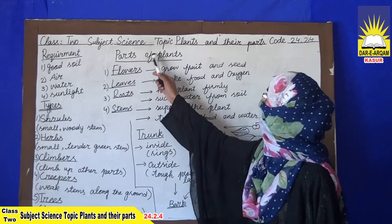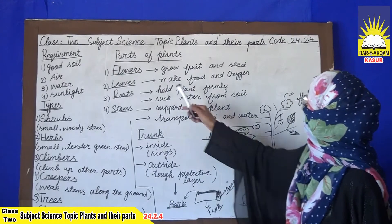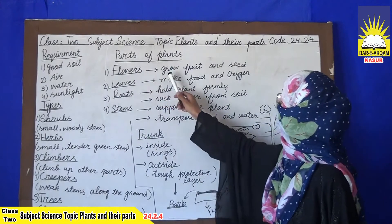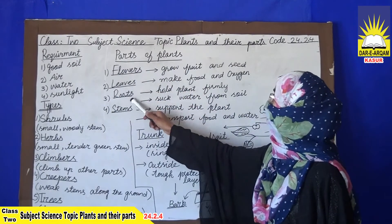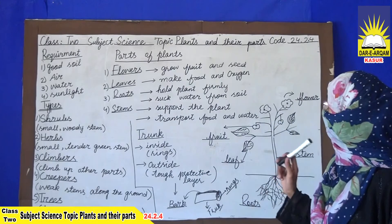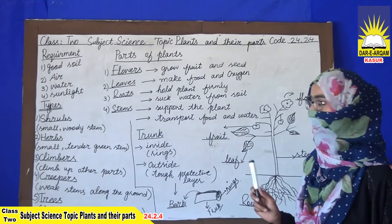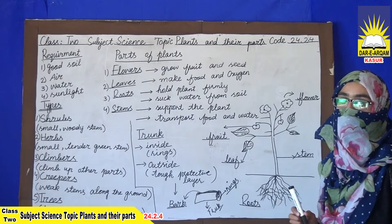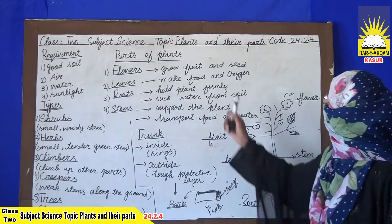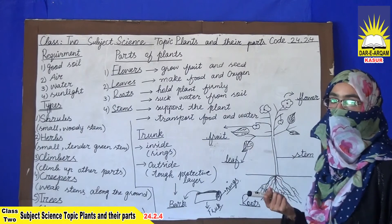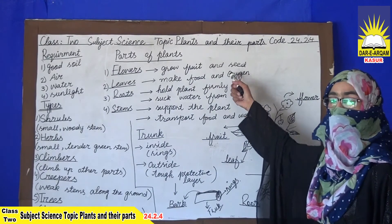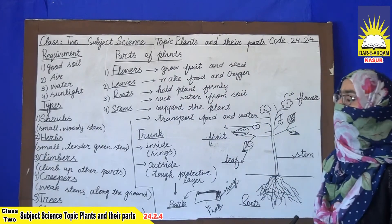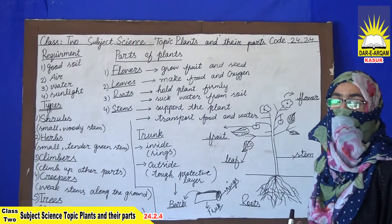Now we discuss the parts of plants. The parts are: flowers, leaves, roots, and stems — and also fruit. Flowers grow into fruit and seeds. If we have a seed, we can grow a plant; without a seed, we cannot grow any plant.